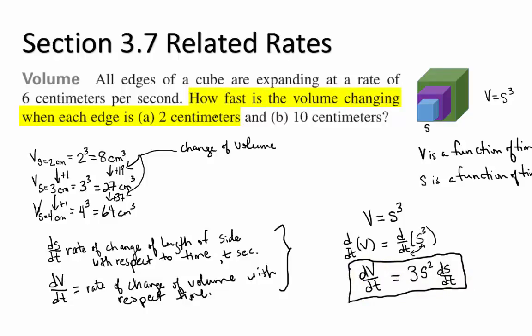How fast is the volume changing when the edge is two centimeters? What variable are they asking us to find in part a? They're asking us to find dv dt, right? How fast is the volume changing? What are they telling us in part a? What piece of information or variable are they giving us the value for? s. They're telling us that s is two. But is that enough information to find dv dt according to this formula? No.